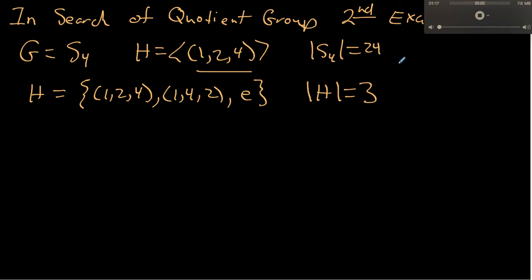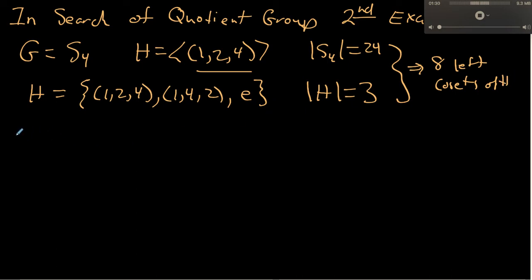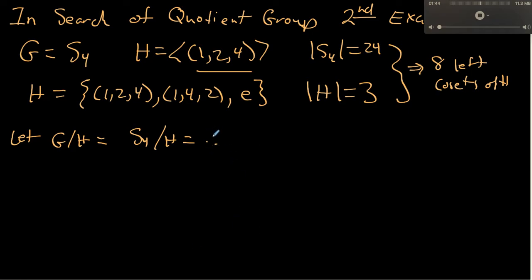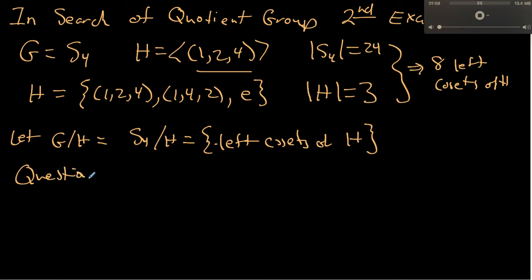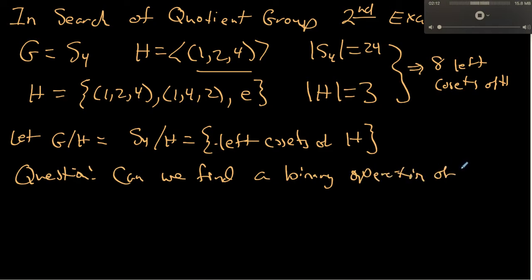The size of S4 is 24, and together these say we should have 8 left cosets of H. What we want to do is let G mod H — in this case S4 mod H — be the set of left cosets of our subgroup. Our question again is: can we find a binary operation on the set of left cosets that makes it into a group?